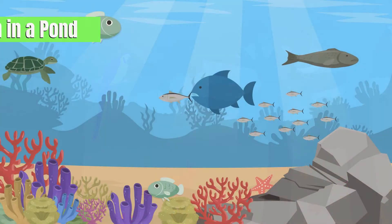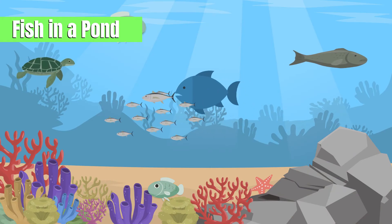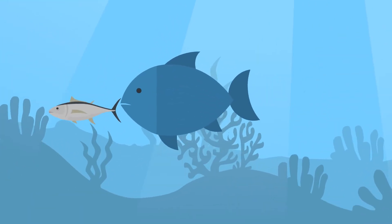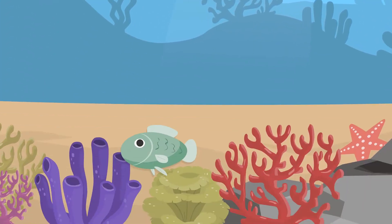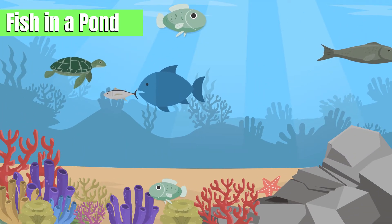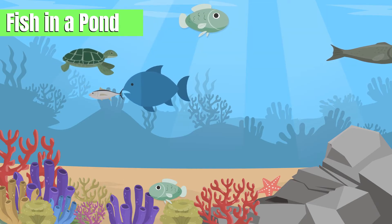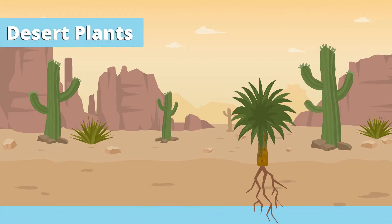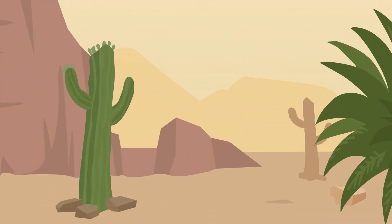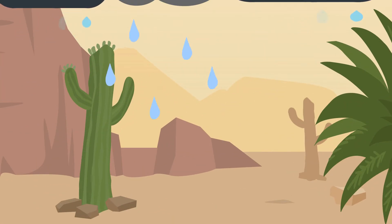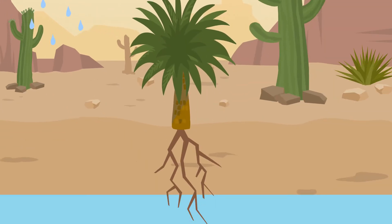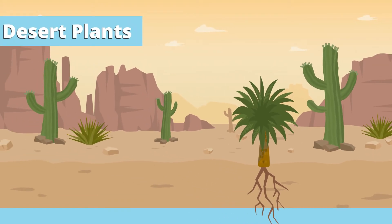Adaptation examples — fish in a pond: in a single pond, you might find fish with sharp teeth that eat other fish, fish with flat teeth that grind plants, and bottom dwellers that eat algae. Each fish has adapted to a specific niche, allowing them to coexist. Desert plants: cacti store water in their thick stems and have shallow roots to absorb rain quickly, while other desert plants may have long roots that reach deep underground to find water. These adaptations help different species survive side by side.